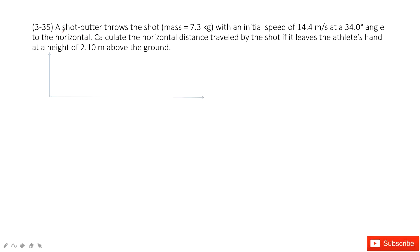We can see it tells us about a shot quarter. The initial position is 2.1 meters above the ground, so we know this is y-naught. The initial speed is 14.4 with an angle — this angle theta is relative to the horizontal. And then it just moves this way.